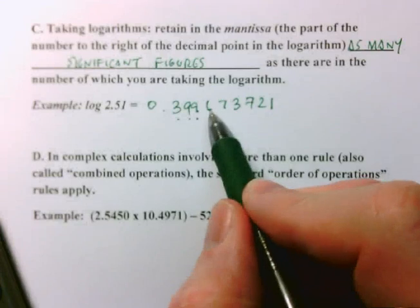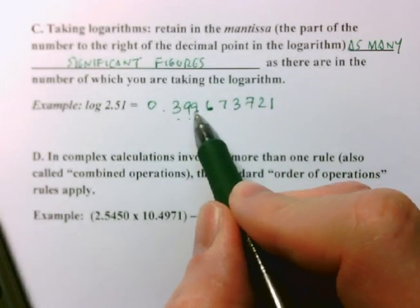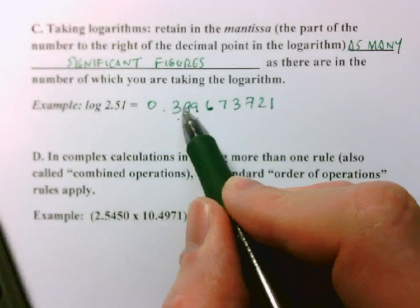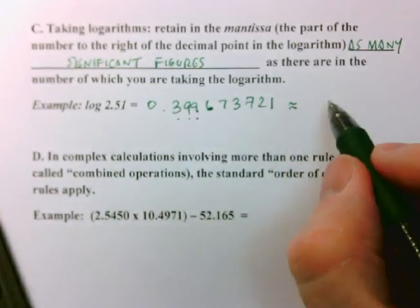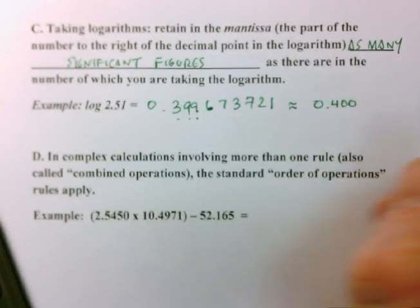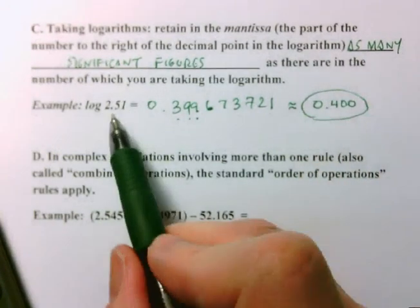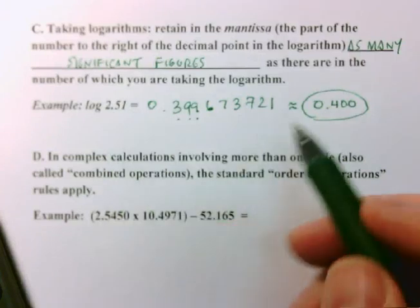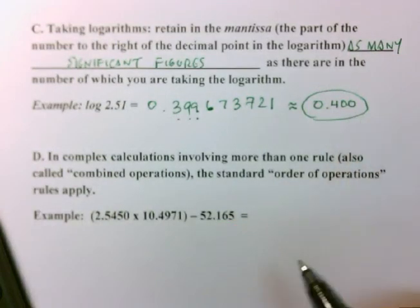So because this number following that one, the fourth number is a 6, that will round that 9 up to a 0, that one up to a 0, and that one up to a 4. So the scientifically significant answer is 0.400. 3 sig figs in the original number, 3 sig figs in the mantissa of the answer. And that's the rule for taking logarithms and using sig figs.